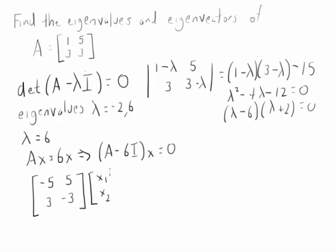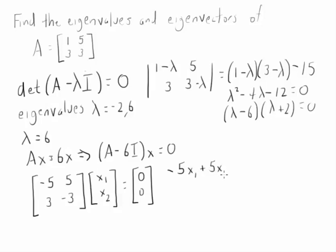Solving for X1 and X2, we want to get 0. Let's rewrite these as equations. And as I'm doing this, I want you to note something — both of these are really the same equation.